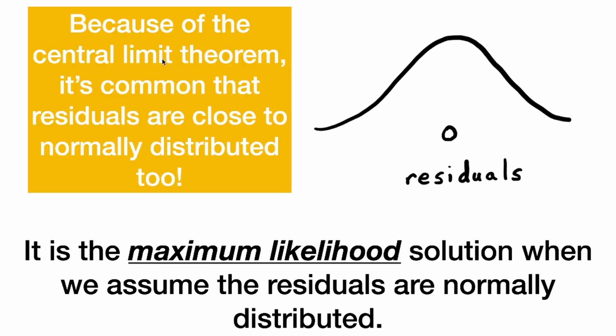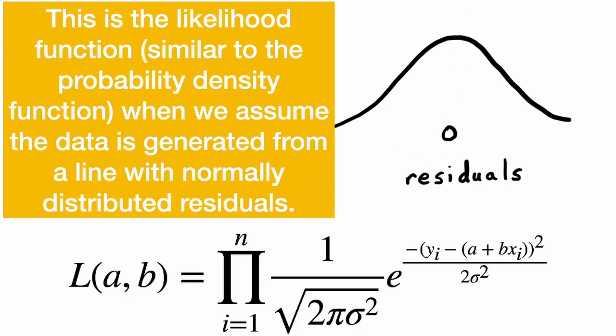And because of the central limit theorem, it's common that the residuals are also close to normally distributed. So they're centered at zero and they're normally distributed. Now, this is the likelihood function.